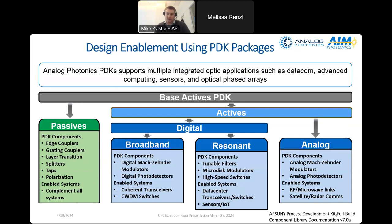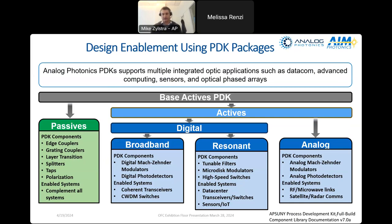For example, we have analog MZMs and analog photodetectors specifically designed for linearity and high dynamic range, making them suitable for coherent communications, analog RF, and microwave links. On the other hand, we have digital active components optimized for speed, classified as either broadband or resonant. These digital active components enable the design of digital transceivers, switches, WDM, and sensing.